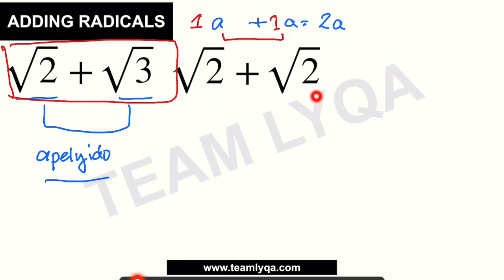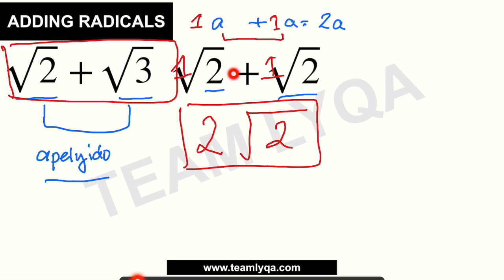Following that logic, what's the answer here? We have a 1 there and another 1 here. If I combine them, that will be 1 plus 1, which equals 2. Then we copy the last name, which is square root of 2. So the answer is 2 square root of 2. That's our final answer. Why? Because they have the same radicand, the same index number which is 2, so I can combine them.